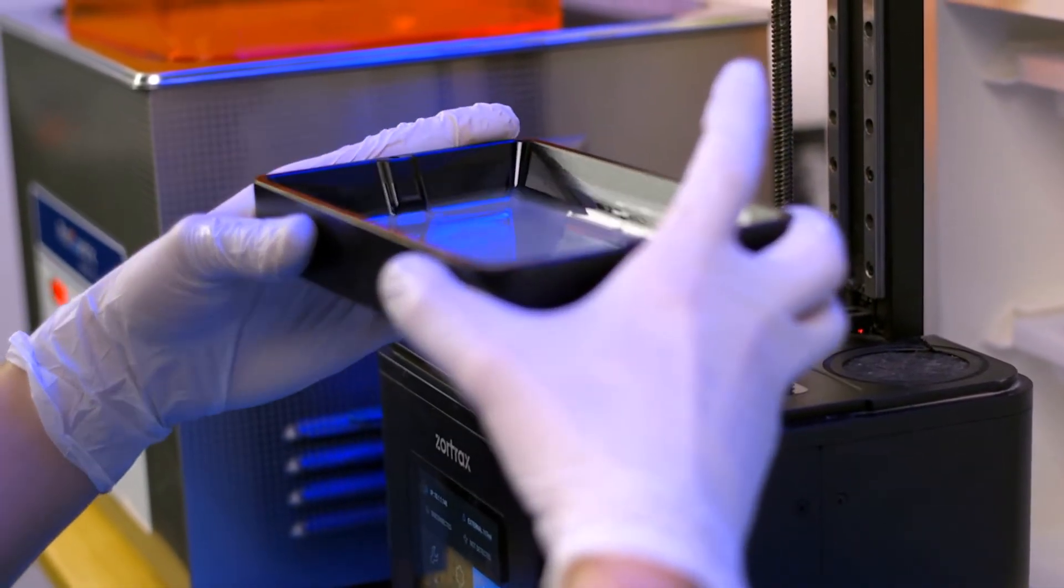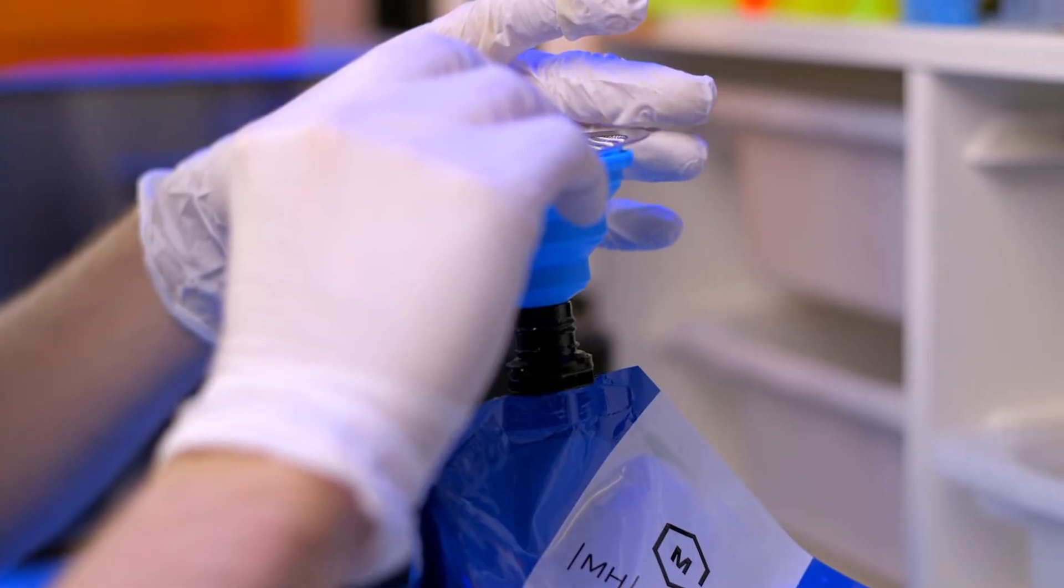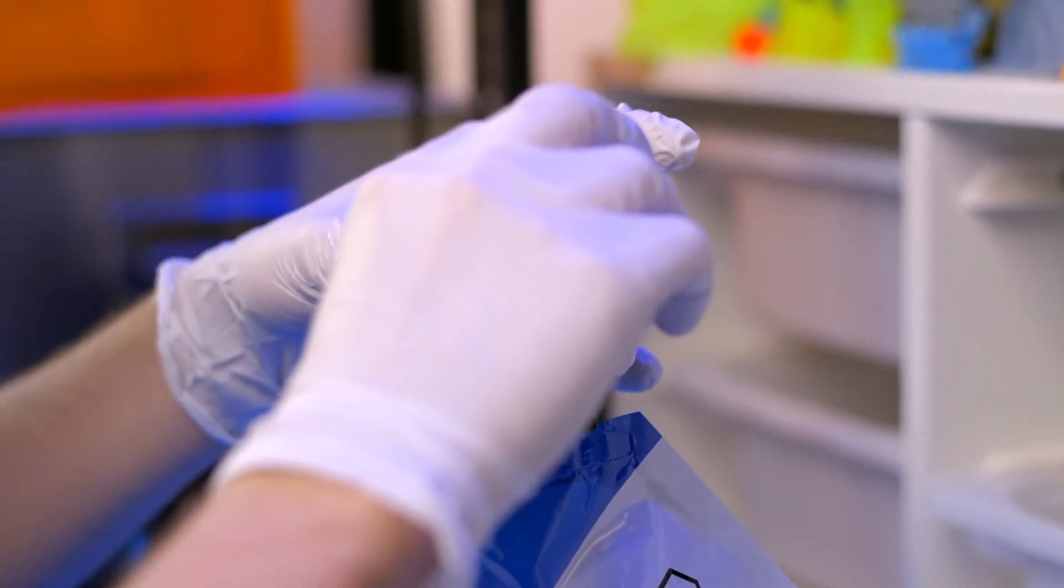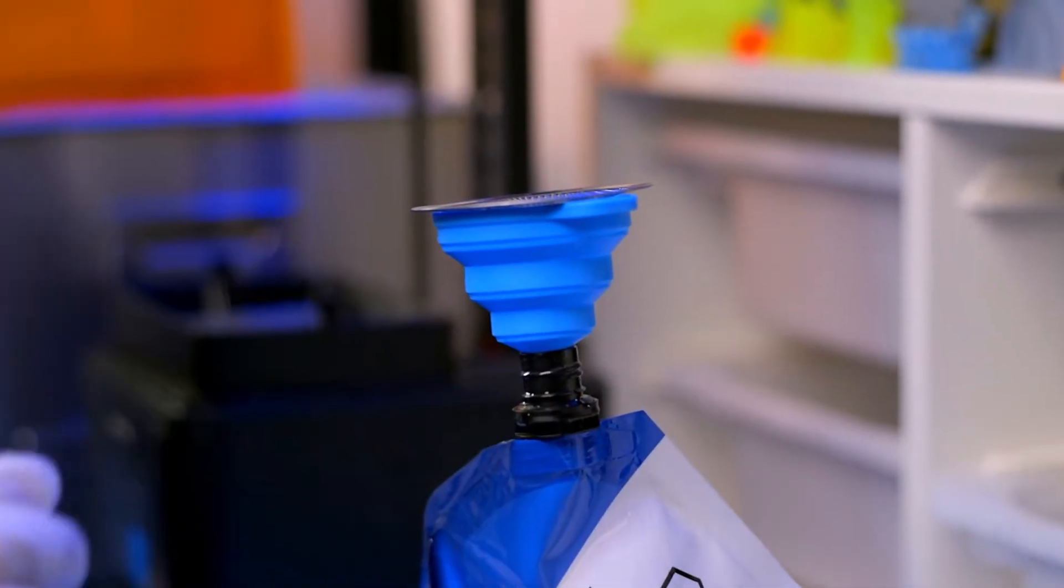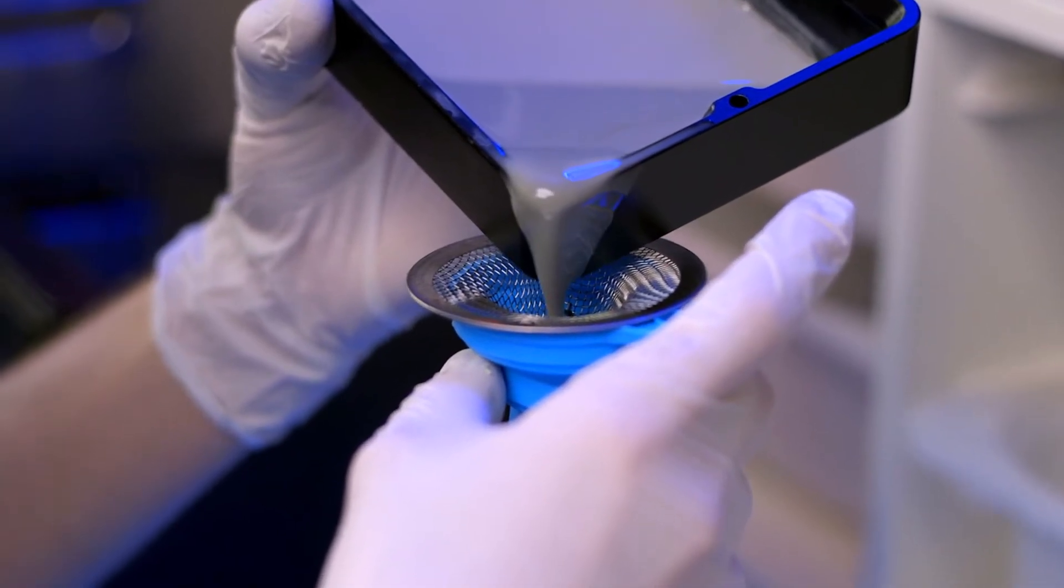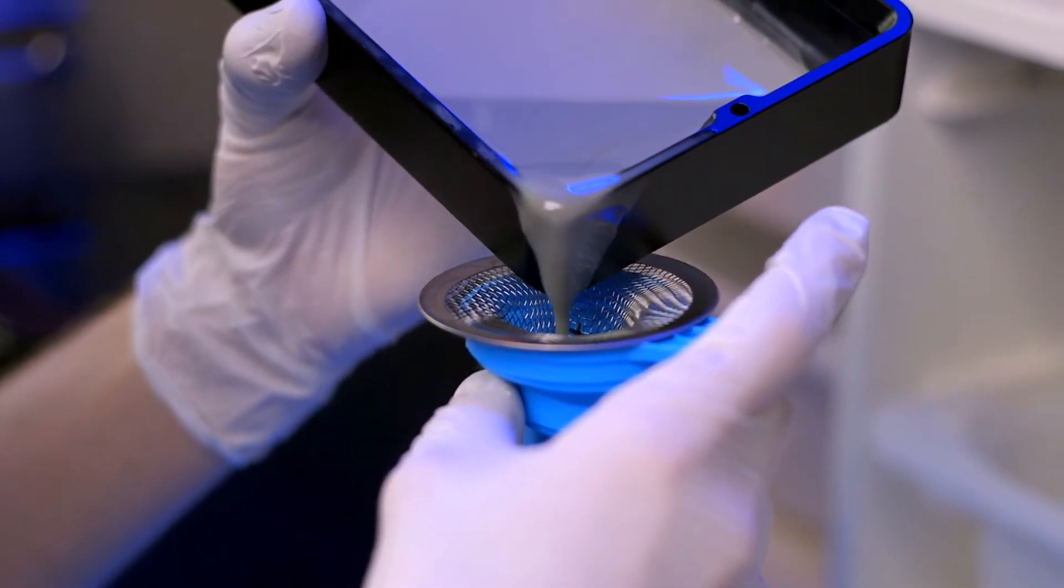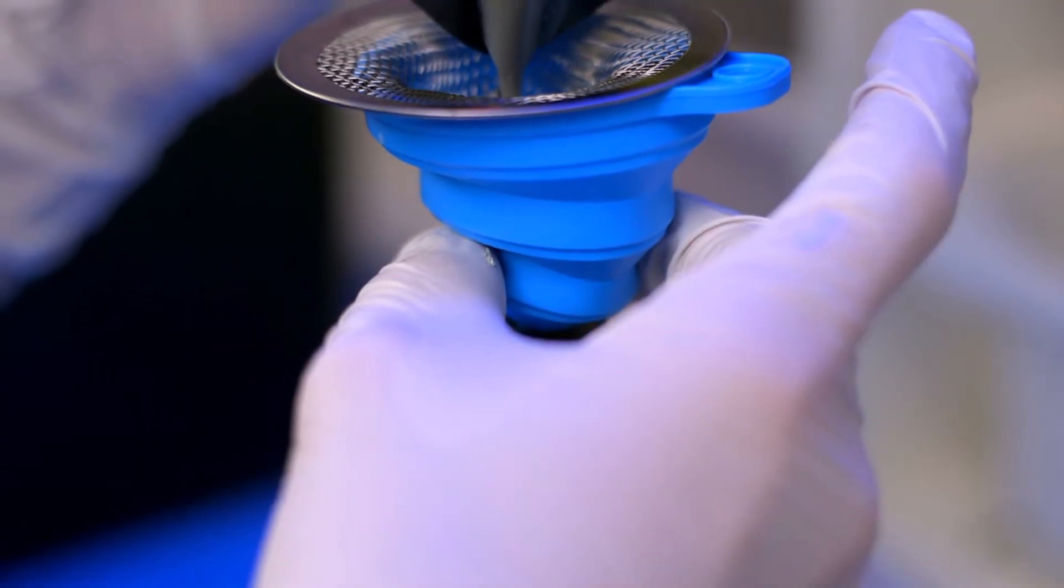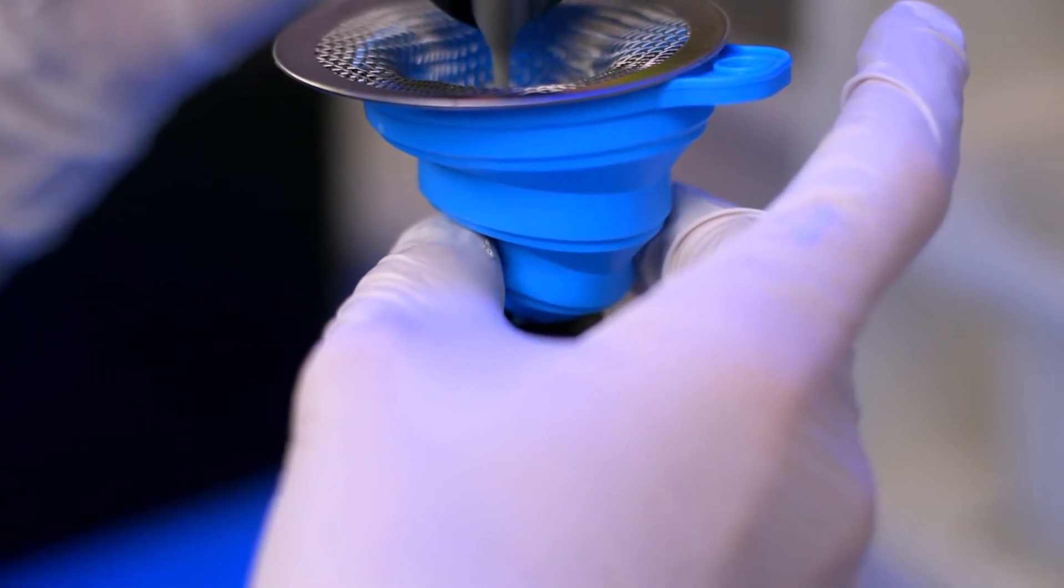Step 9: Set your storage container on your protected surface and place the funnel and strainer into the opening. Step 10: Begin slowly pouring resin into the container using the pour spout in the vat. You may need to burp the funnel to allow air into the container and keep the funnel flowing.